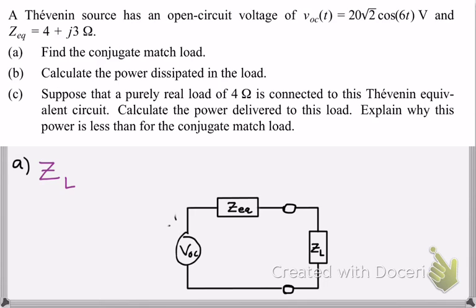So the match load, like I said before, is the conjugate of ZEQ. So there's the conjugate. So we're given 4 plus J3 as the impedance of the equivalent impedance. So the conjugate of that is simply 4 minus J3.